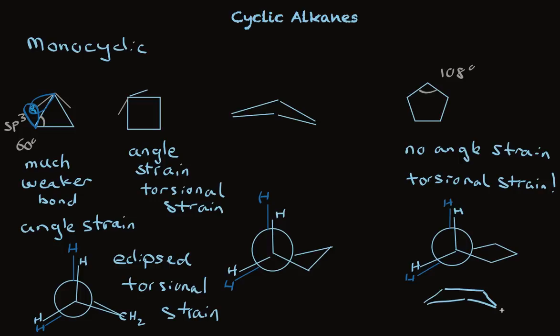And the torsional strain owing to the eclipsed arrangement of the groups all the way around the ring, no matter which carbon pair you look at, you see an arrangement that looks exactly like this eclipsed arrangement here. So the torsional strain is significant. And the cyclopentane structure also then is a good ways from ideal.